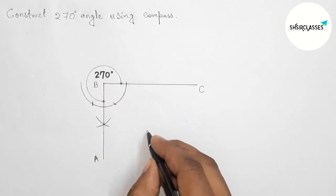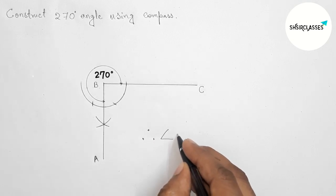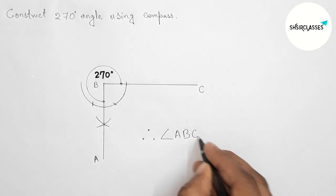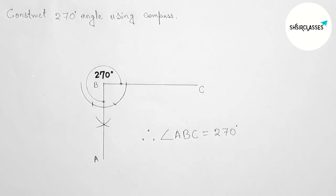is a total 270-degree angle. Therefore, angle ABC is equal to 270 degrees. That's all. Thanks for watching. Please share it with your friends.